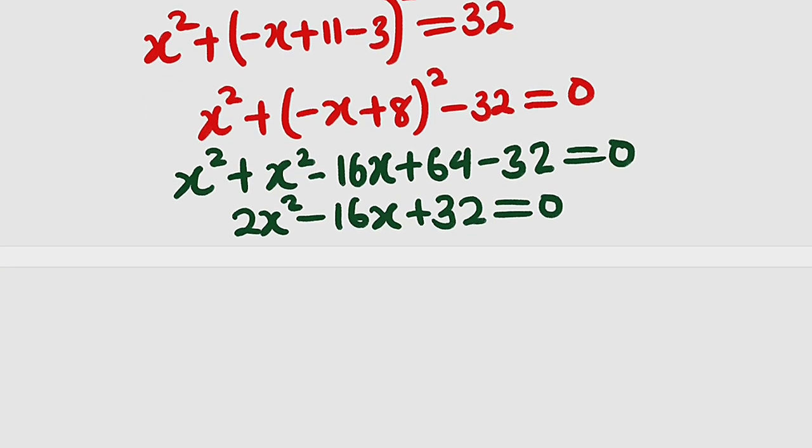We can divide every single term by 2, which is the leading coefficient. We have 2x squared divided by 2 is x squared minus 16 divided by 2 is 8x plus 32 divided by 2 is 16, and this is equal to 0. This is a quadratic equation, which is a perfect square quadratic equation, because half of negative 8 is negative 4 and negative 4 squared is 16.